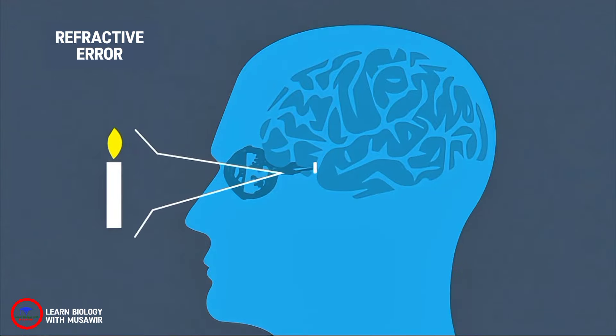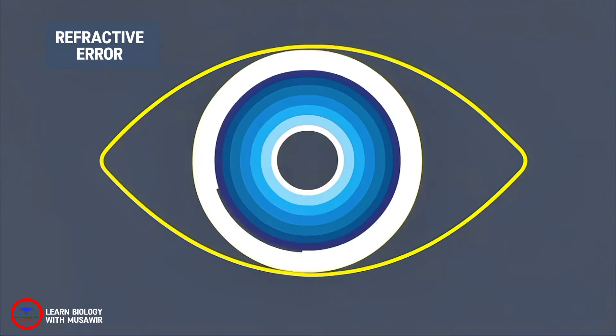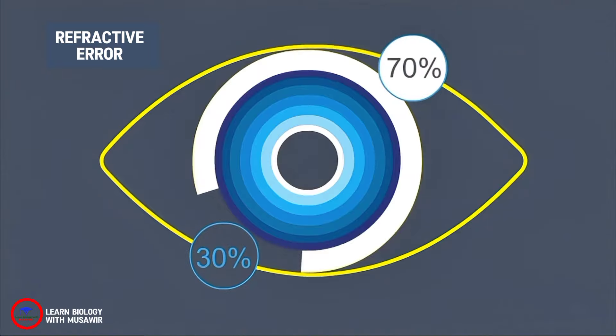The pupil and the lens keep adjusting themselves so that we see the object clearly. 70% of the eye's focusing power comes from the cornea and 30% from the lens.